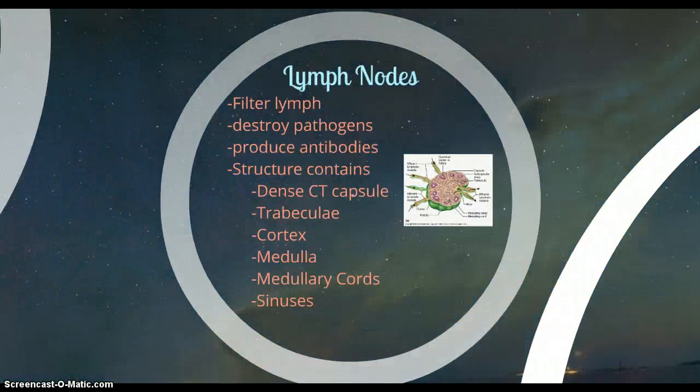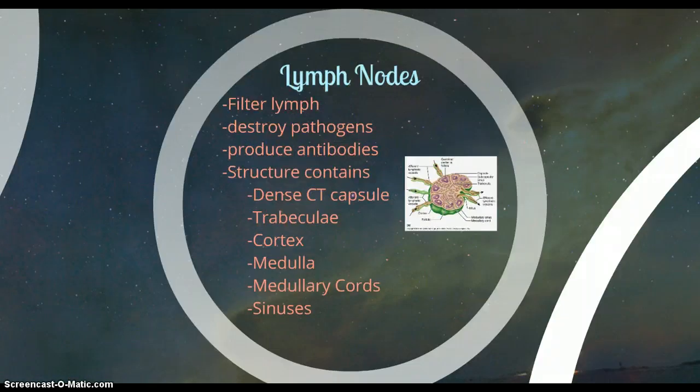Lymph nodes filter out lymph — that's their main job. They destroy pathogens as well because they have lymphocytes and macrophages. The B cells within them produce antibodies. I also want to mention that B cells can turn into plasma cells and memory cells. Plasma cells can also secrete antibodies, and memory cells just remember the antibodies in case it encounters the same pathogen.